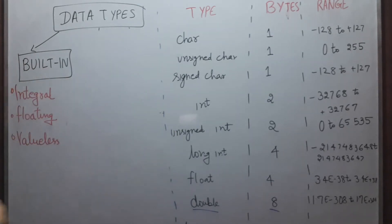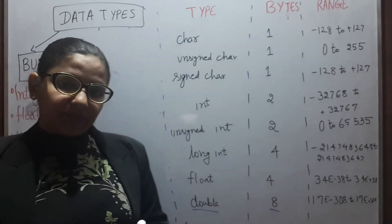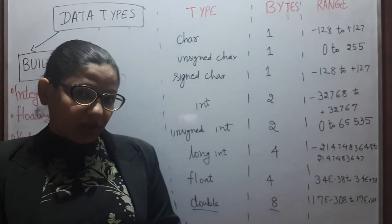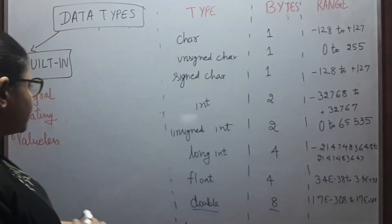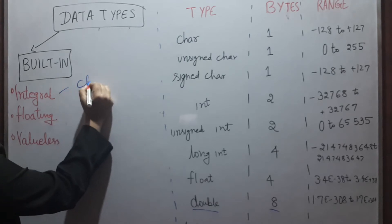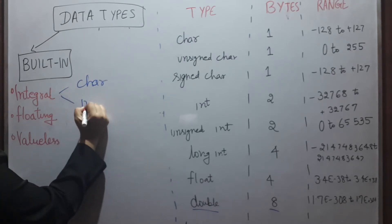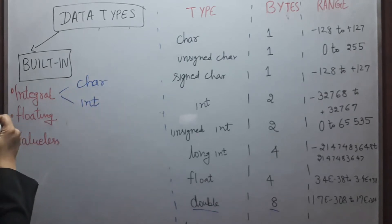Built-in type is further of three different categories: integral, floating point, and valueless. Integral data types are used to store integer values. It is further of two types: char and int.